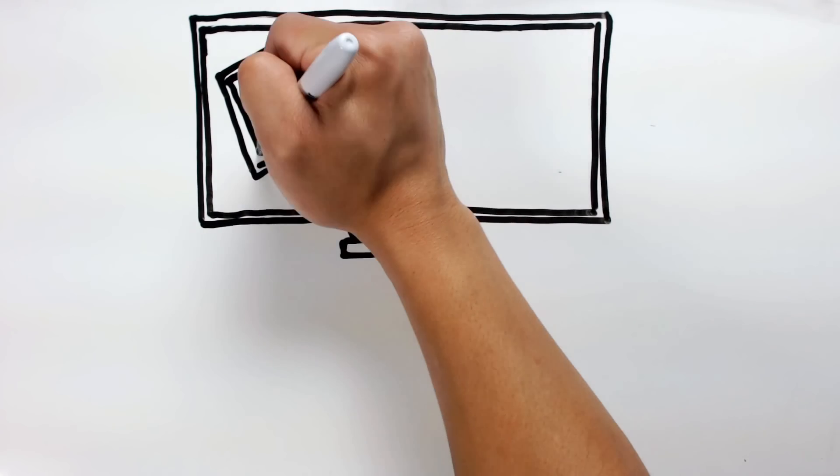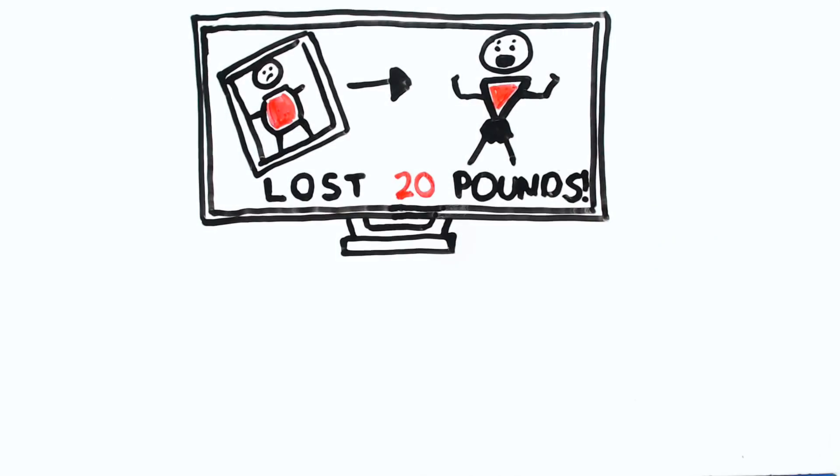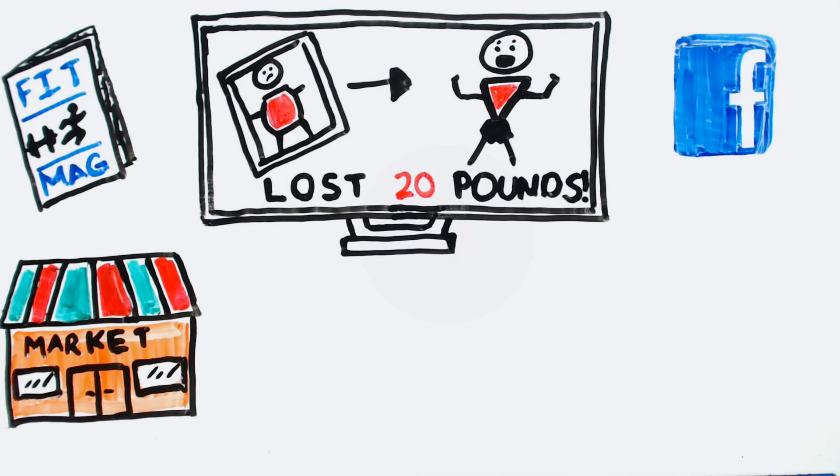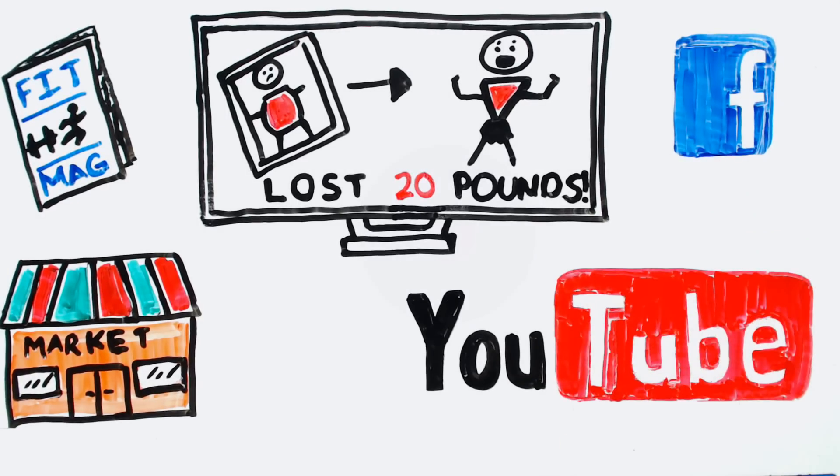You turn on the TV and see a commercial about a new amazing diet that promises to help you lose up to 20 pounds in one month. You see similar ads in magazines, Facebook, at the market, and even on YouTube. These ads exist virtually everywhere.